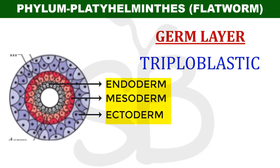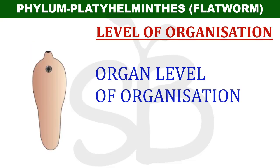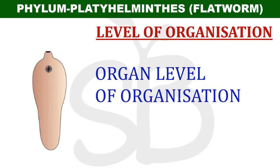Endoderm, mesoderm, and ectoderm - these are three layers, making them triploblastic organisms. Next, they are acoelomate organisms, meaning the body wall and gut wall have no space - coelom is absent. Next, level of organization - this is organ level of organization. They show the organ level where tissues with the same function form organs.